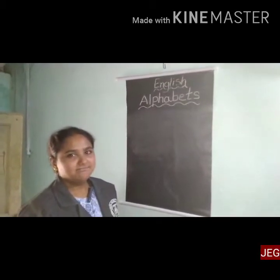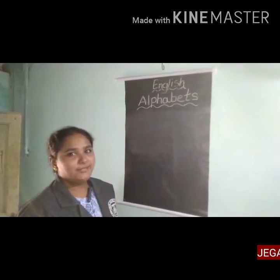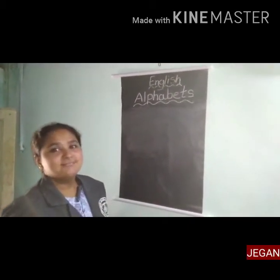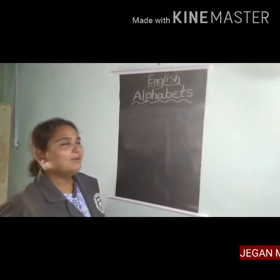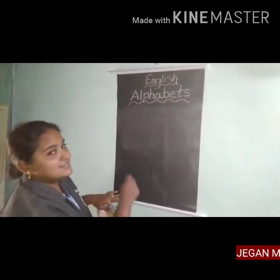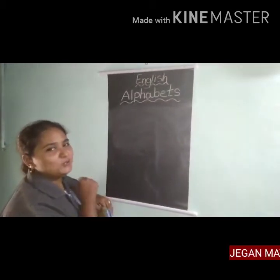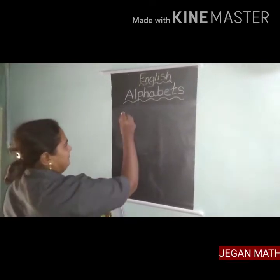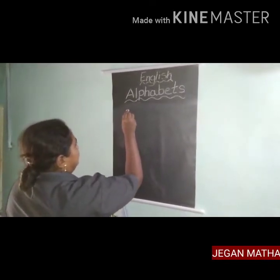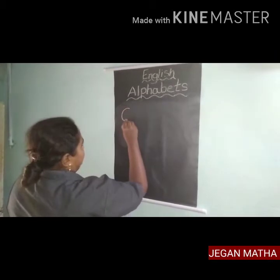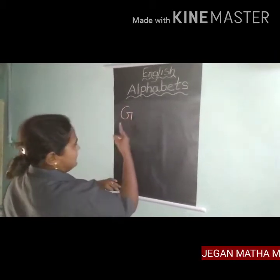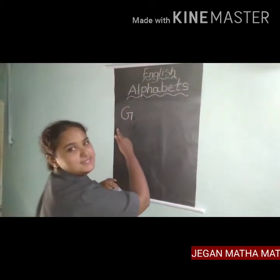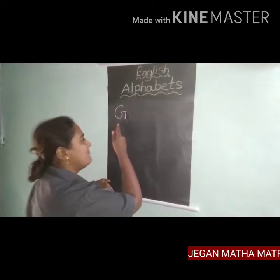Hello kids, today I'm going to teach you alphabets G and H. Okay children, let's see the alphabet. I will teach you the sound and the picture. What letter is this, children? Capital G — what is this? Capital G.